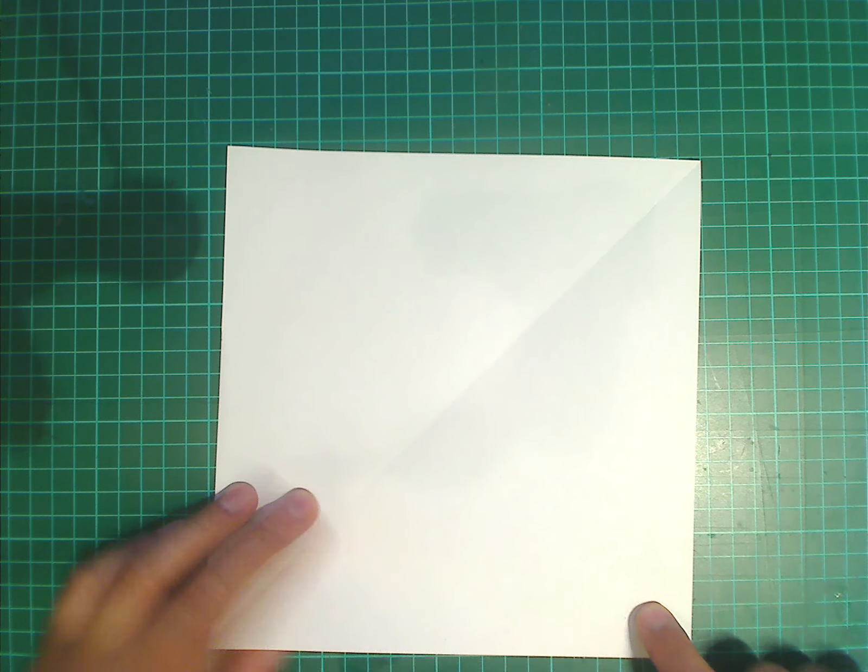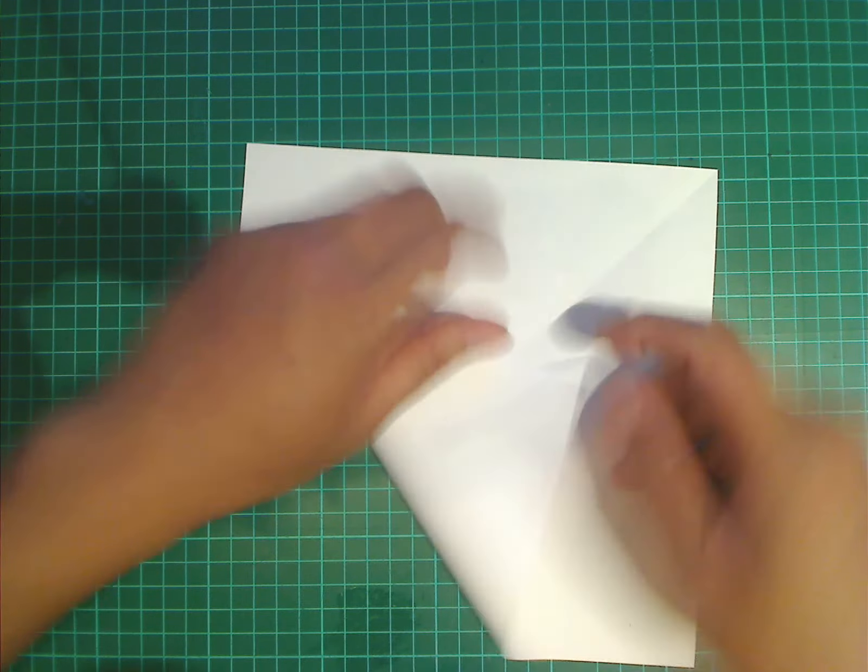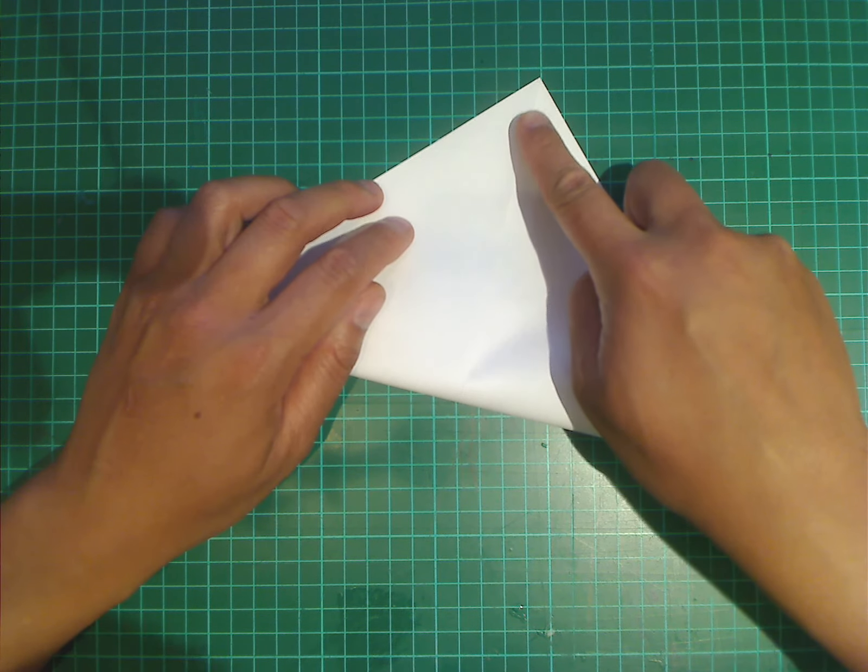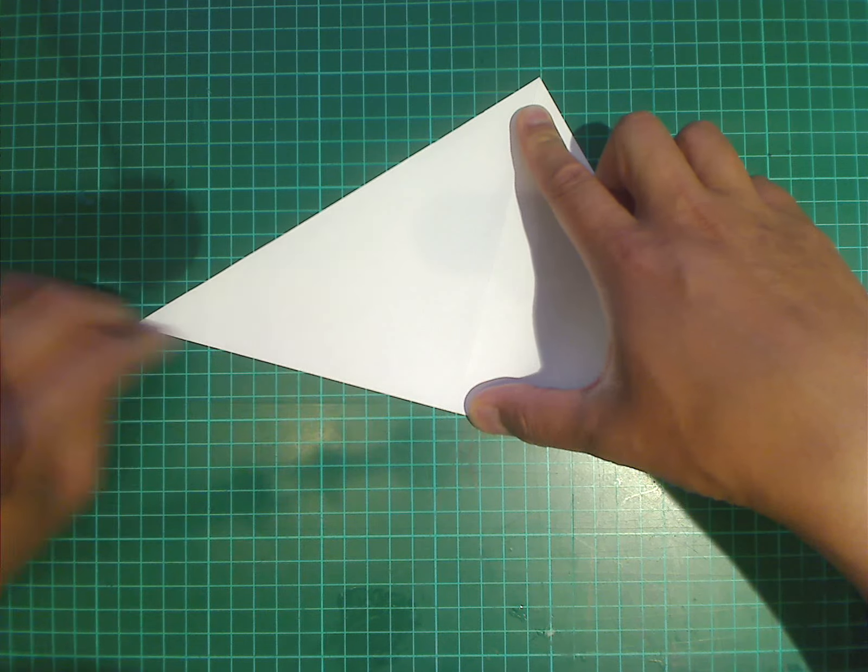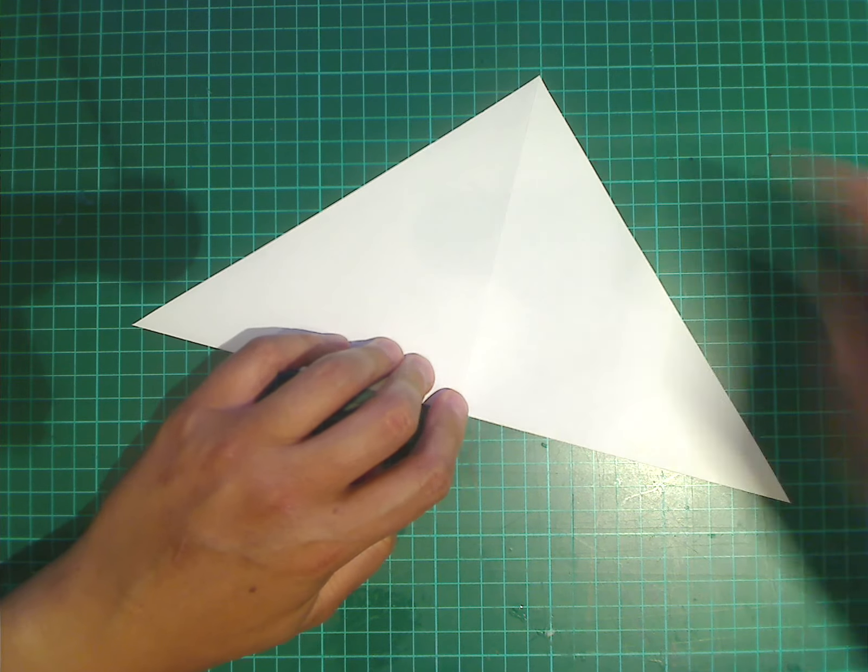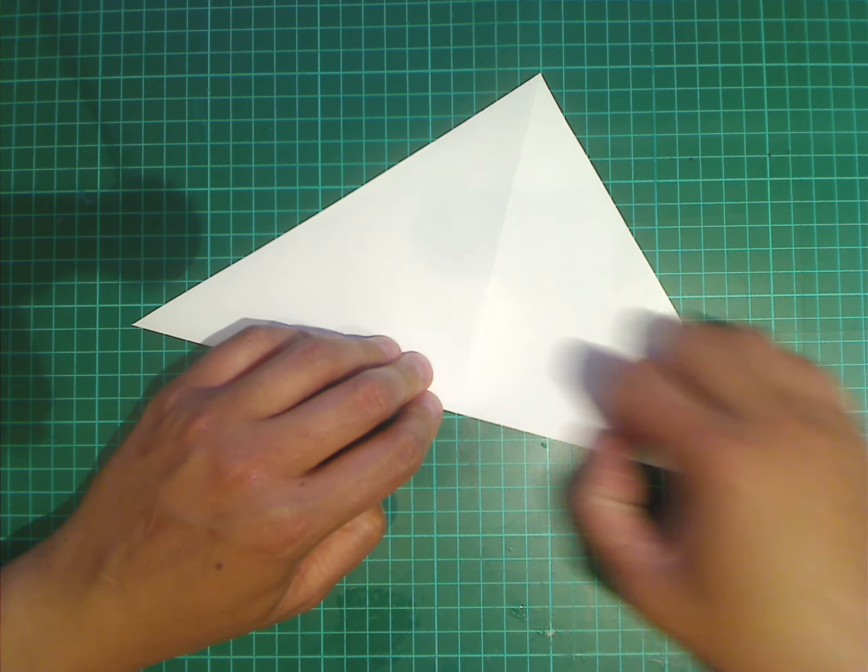Then we're going to crease the other diagonal by folding this corner to this corner. And again, try to be as accurate as you can. Make sure that the corner and the edges meet, and then make a nice sharp crease.